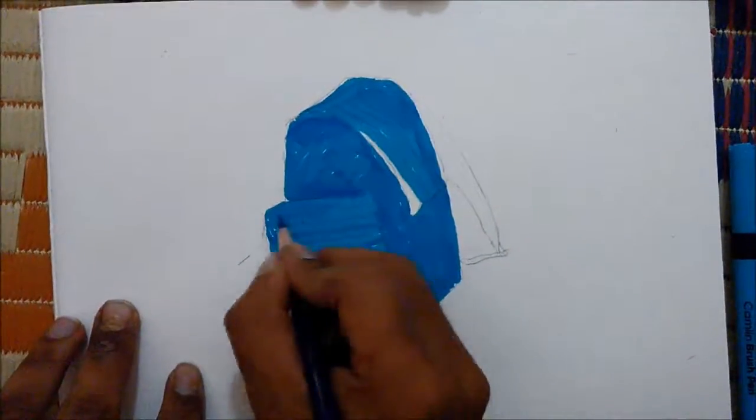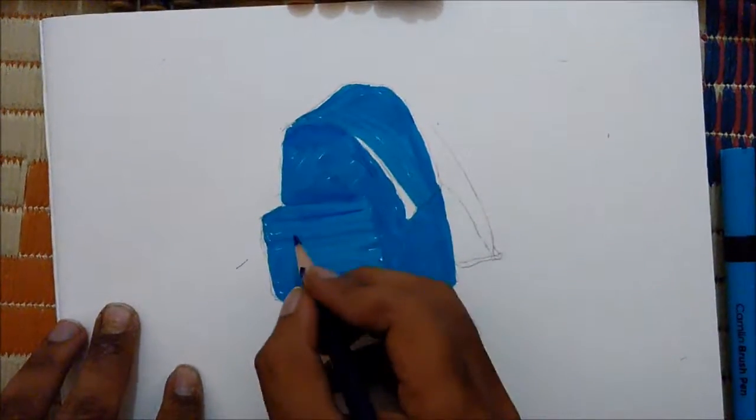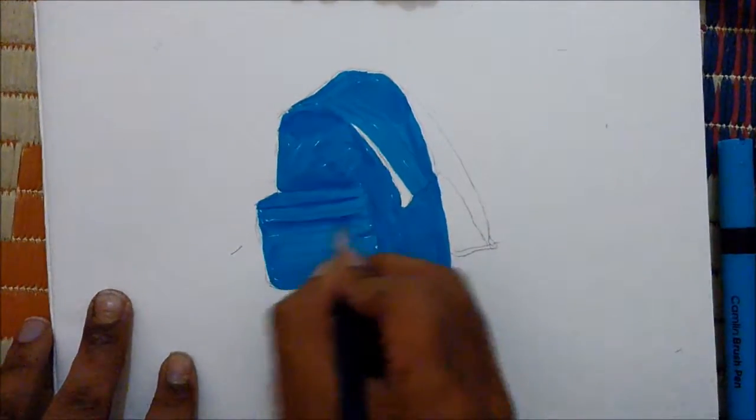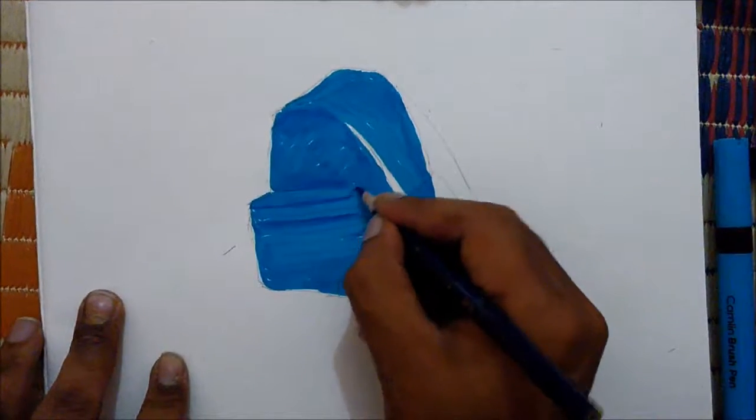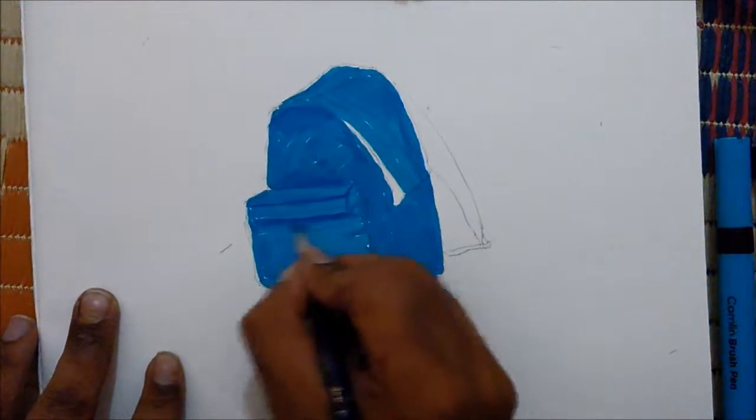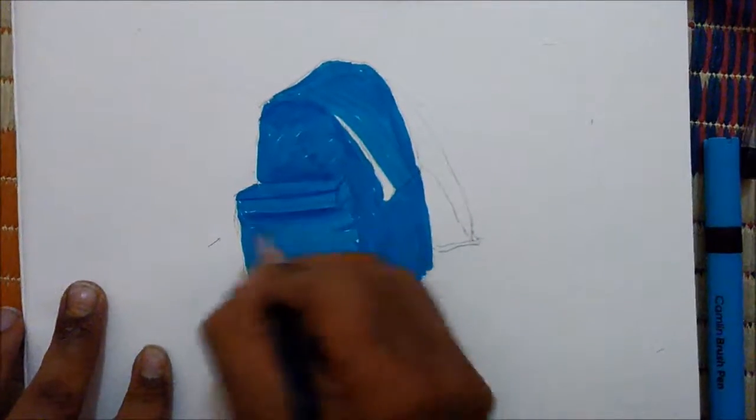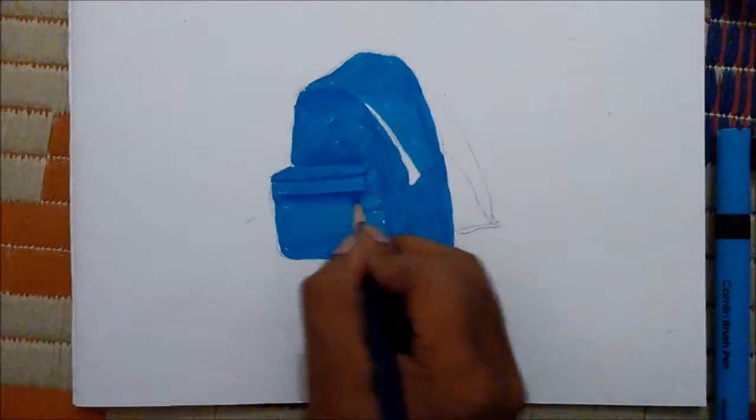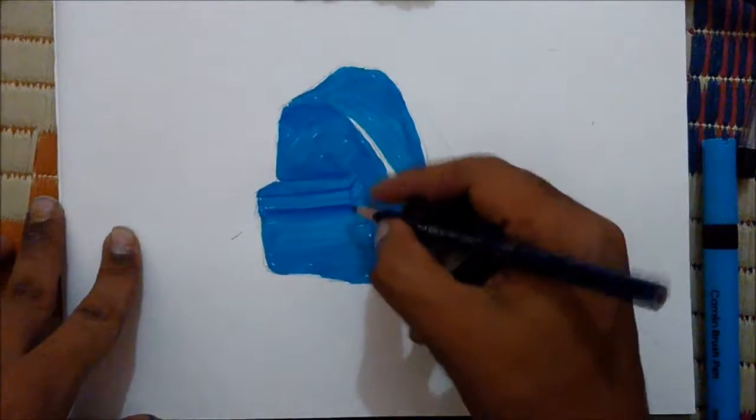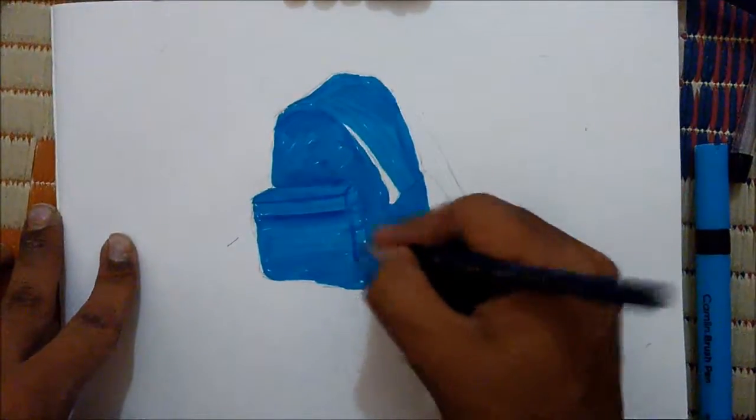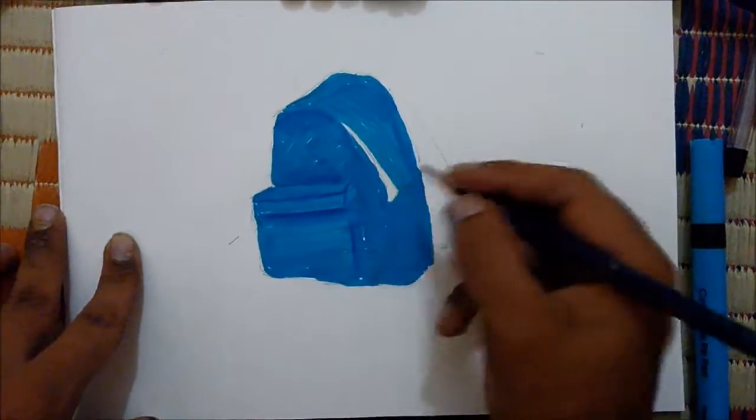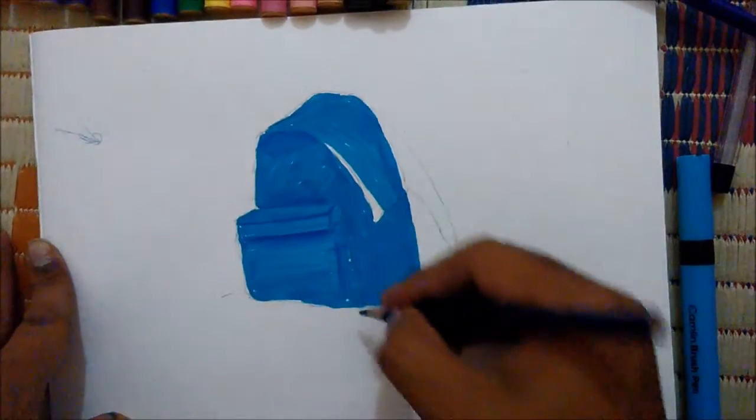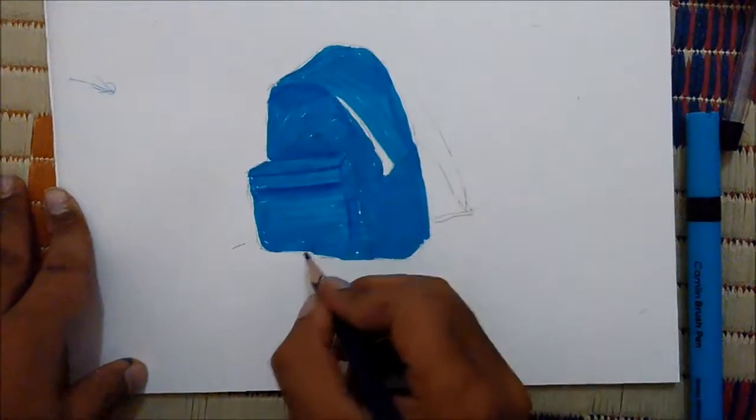Then this side, this folding. Here, and blend the color. Blend the color, because now the light is coming from this side, left side, so the dark color shadows will be in the right side.